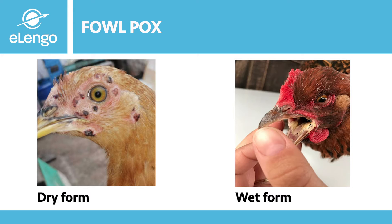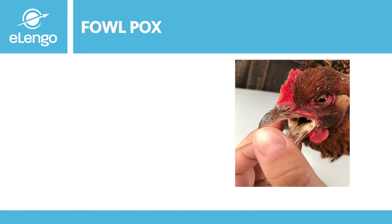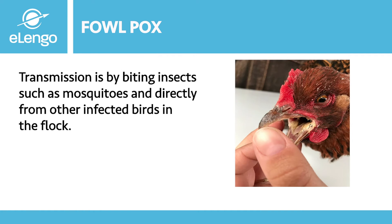If the lesions are located in the upper digestive and respiratory tract, it may cause the chickens to reduce their feed intake and also have difficulties in swallowing. We may also observe other respiratory signs depending on the severity of the disease.